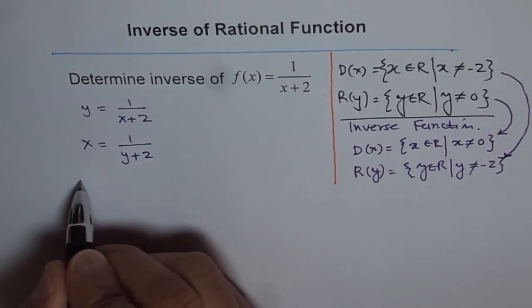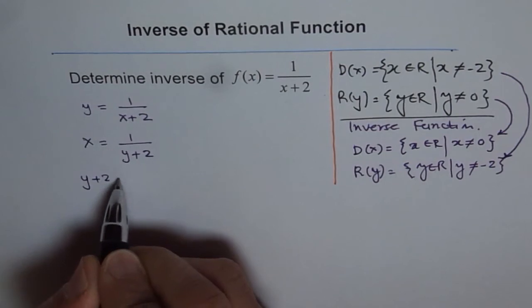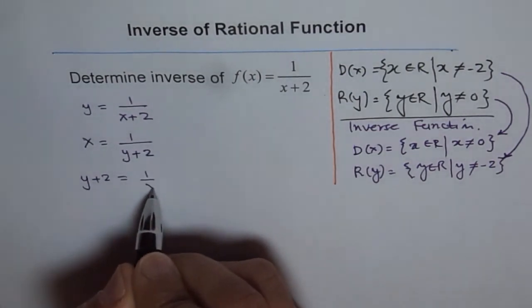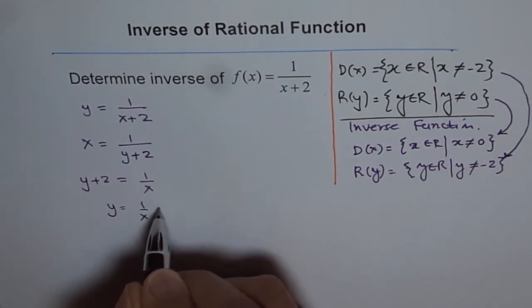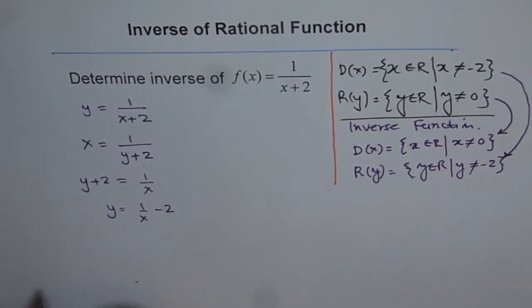So when you cross multiply, you get y plus 2 equals 1 over x, and now you can write y equals 1 over x minus 2. So that becomes the inverse of this function.